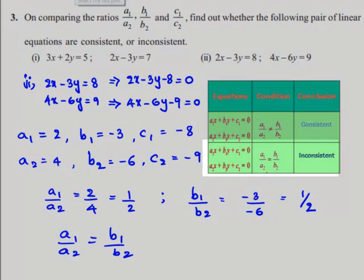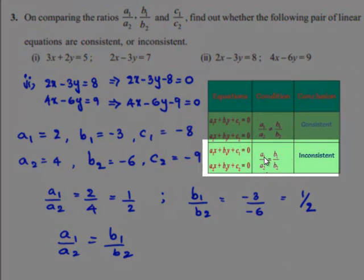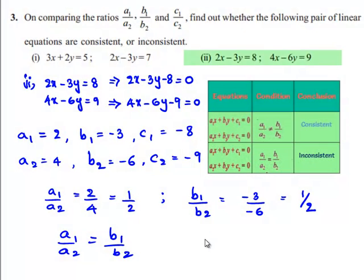Using the second condition, when a1 by a2 equals b1 by b2, the given set of linear equations are inconsistent.